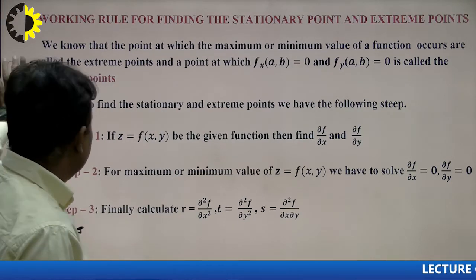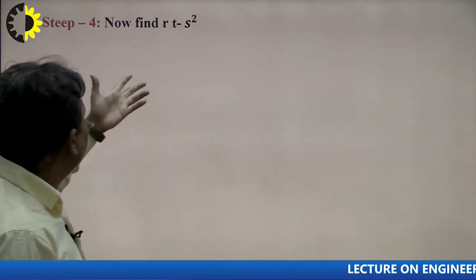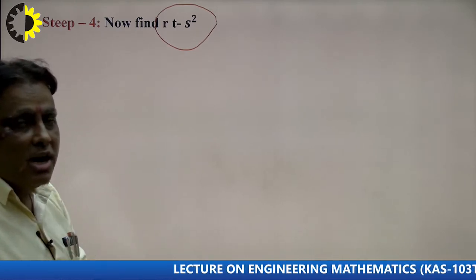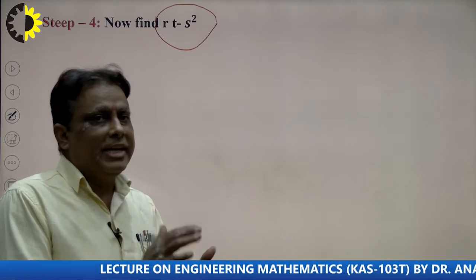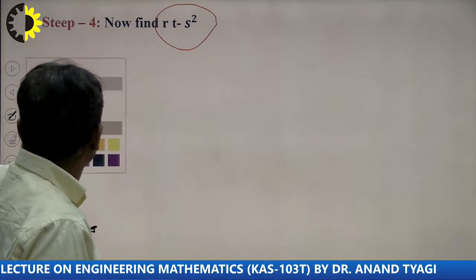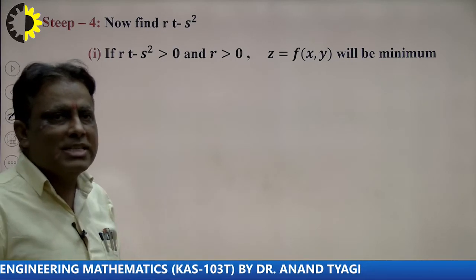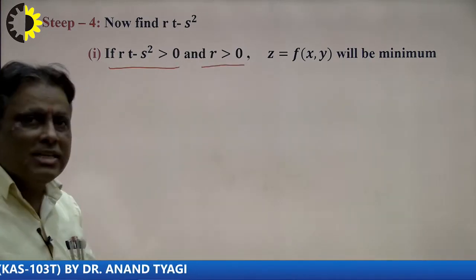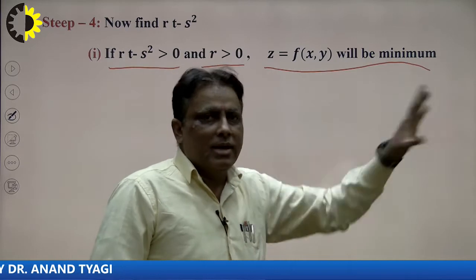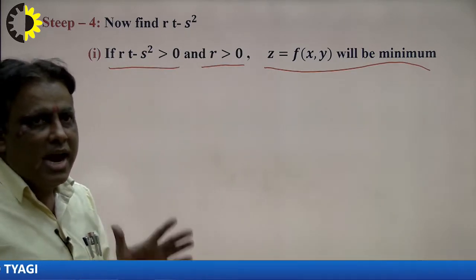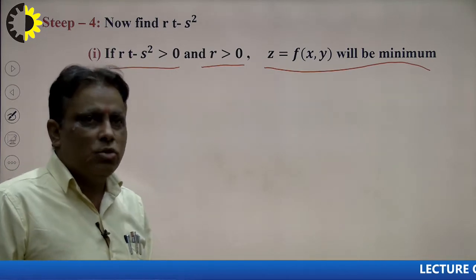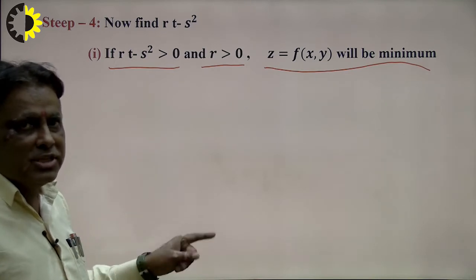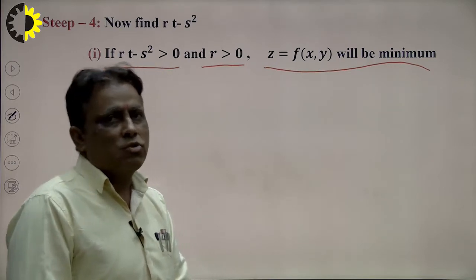We calculate rt − s² at a particular point. There are two results: rt − s² may be greater than 0 or less than 0. If rt − s² is positive at a particular point and r > 0, that means the function will be minimum. The minimum value will be z = f(x,y) at that point.